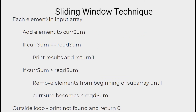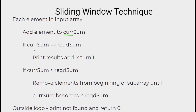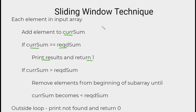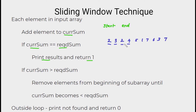To implement this, we need to scan each element in the input array using a loop and add each element to the currentSum. We need a variable for currentSum, initialized to 0 before the loop. We compare the currentSum to the required sum. If they match, we print the results and return 1. While printing results, we mention the start and end index of the subarray. Since i is the current loop variable, the end index is given by i. We also need a variable called start to track the starting element of the subarray, initially set to 0.